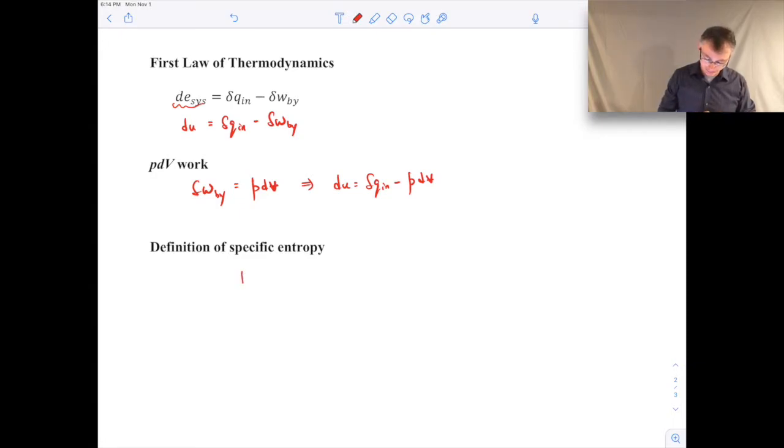The definition of specific entropy, if you go back to a previous lecture, it'll look like this, where T is an absolute temperature. I can rearrange that to write out the heat transfer into the control volume as Tds. We'll substitute these expressions in here. We'll just take that and put it in right up there. And then what we're left with is the following.